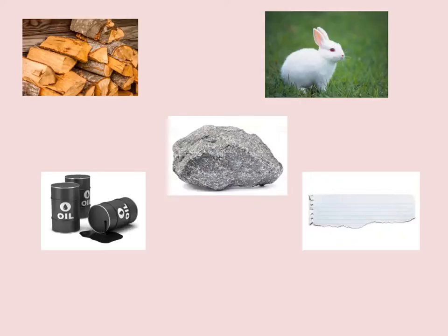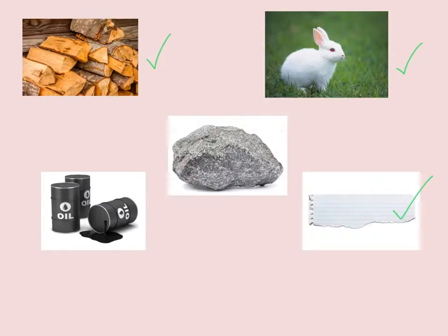Obviously wood and plants are made from photosynthesis. Paper is made from trees, so paper as well. The rabbit — he doesn't use photosynthesis himself, but he eats the grass which gets its energy and carbon through photosynthesis, so yes, the rabbit was made through photosynthesis. Oil is also made through photosynthesis — tiny plants and animals take in carbon from the atmosphere.